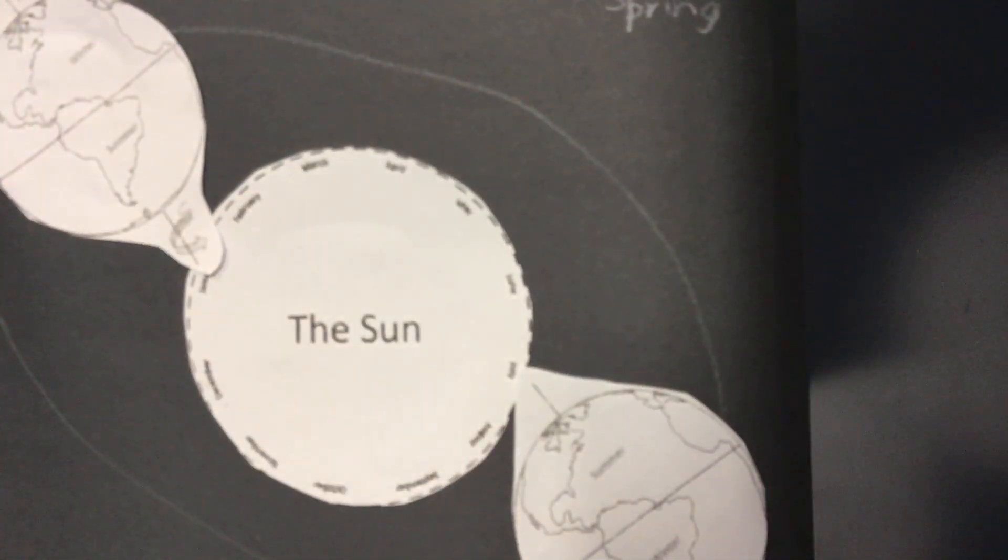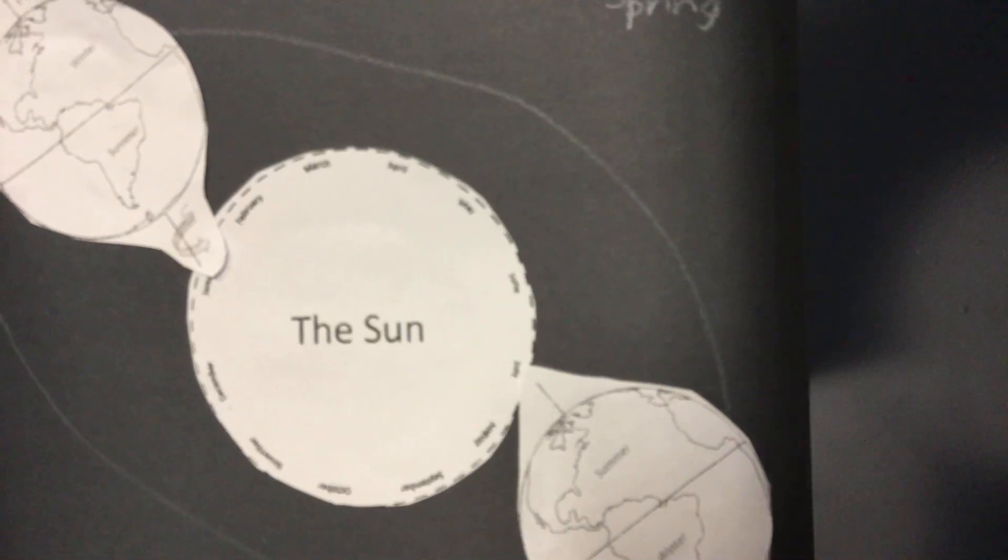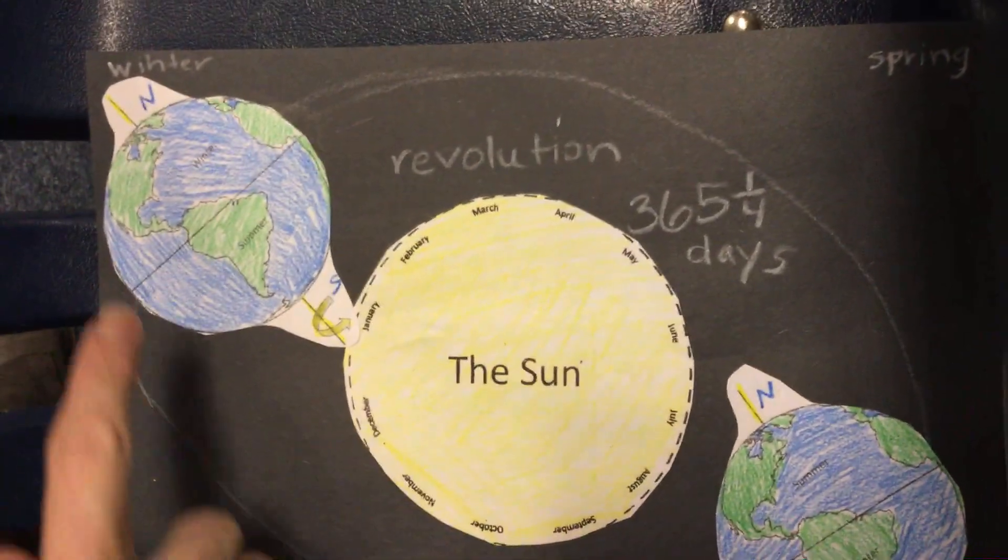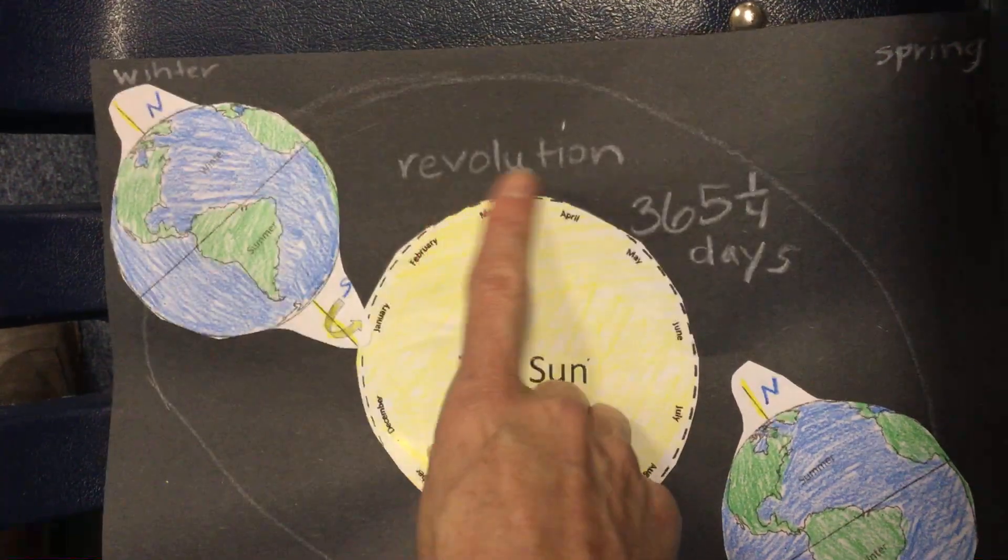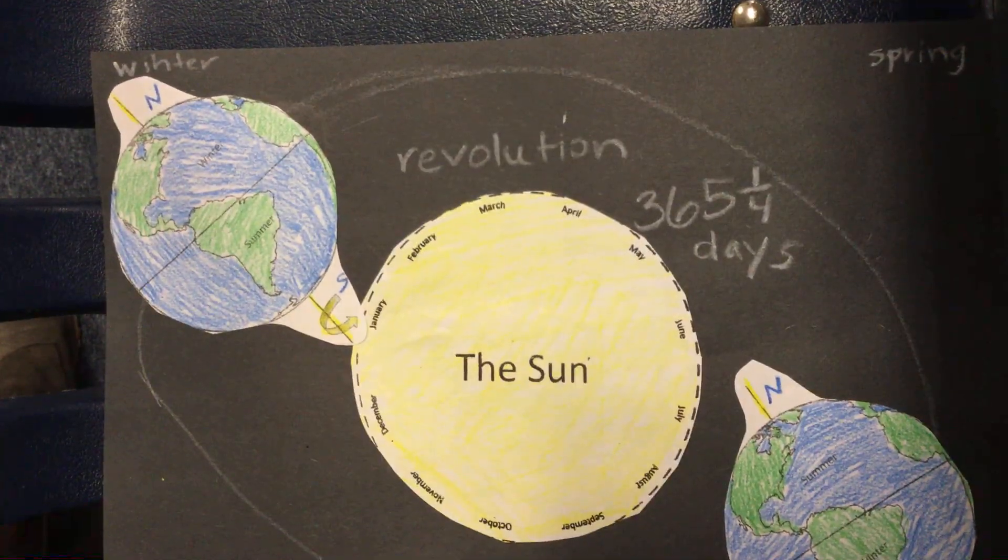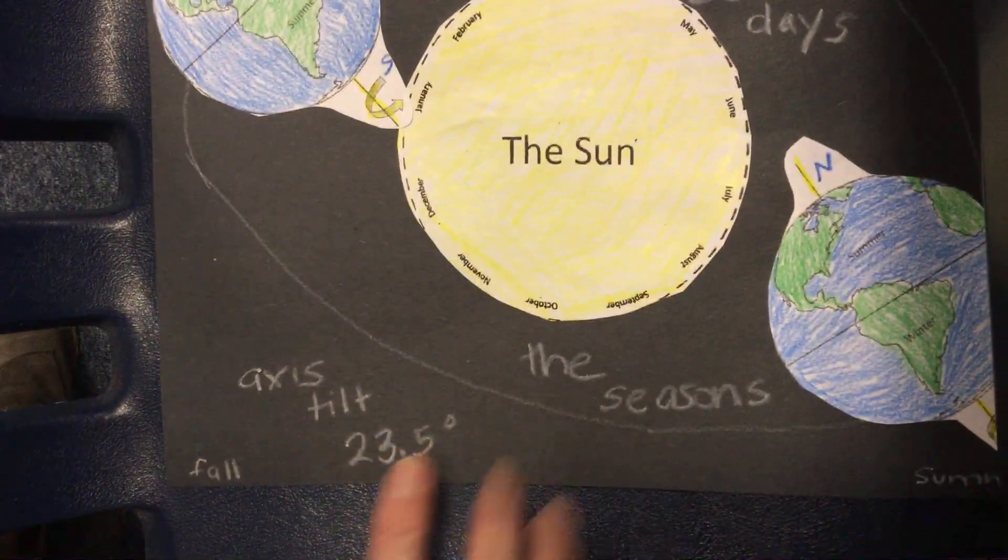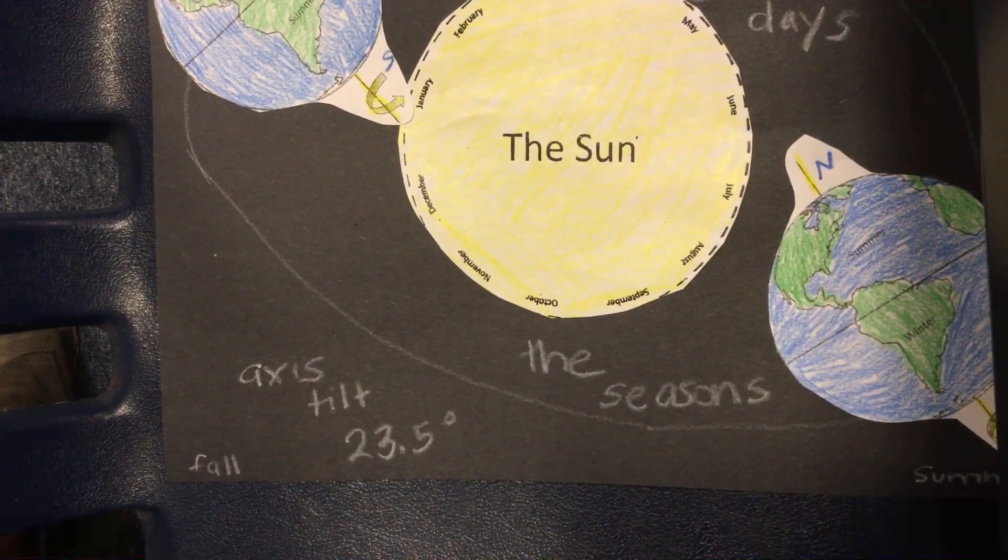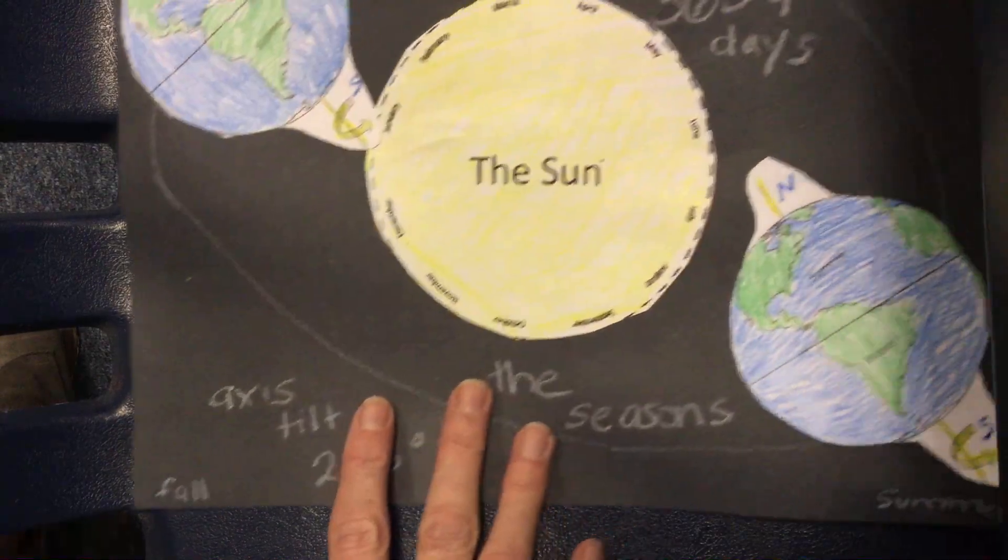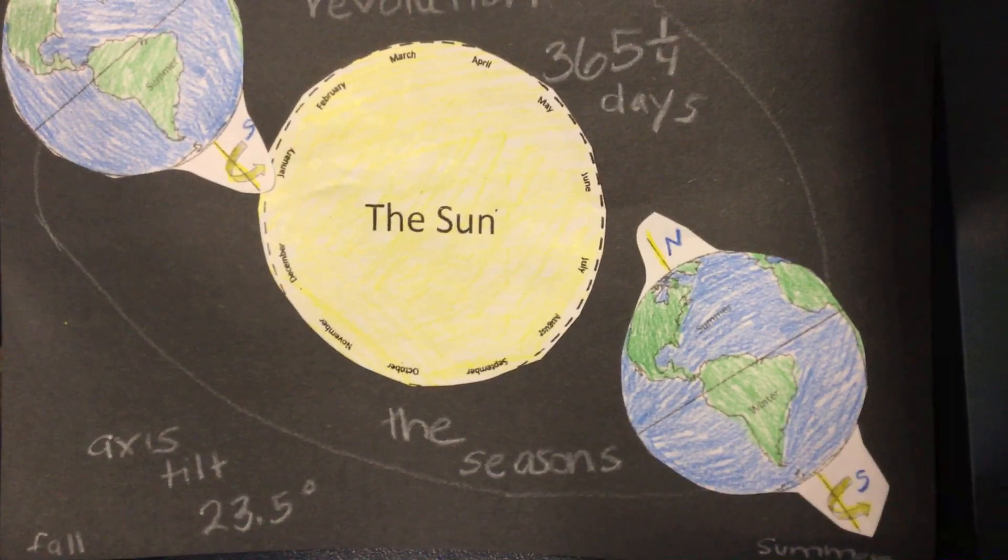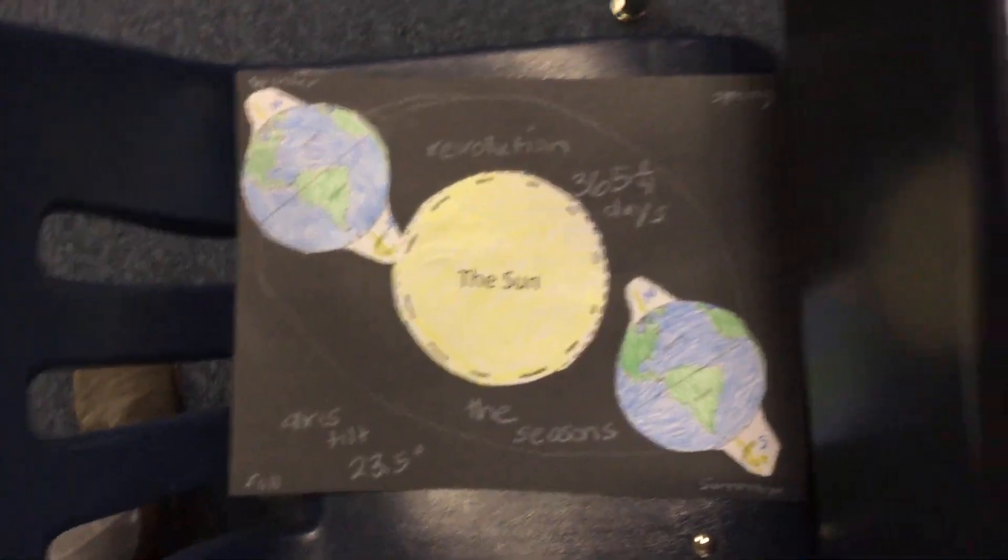I'll show you my final product, my finished product. It looks like this—mine's colored, and you notice that it has the winter, spring, summer, and fall. I wrote the word revolution because that's what this is showing. I wrote how long it takes: 365 and one-fourth days. And I wrote that our axis tilts at 23.5 degrees, and the revolution of course causes our seasons.